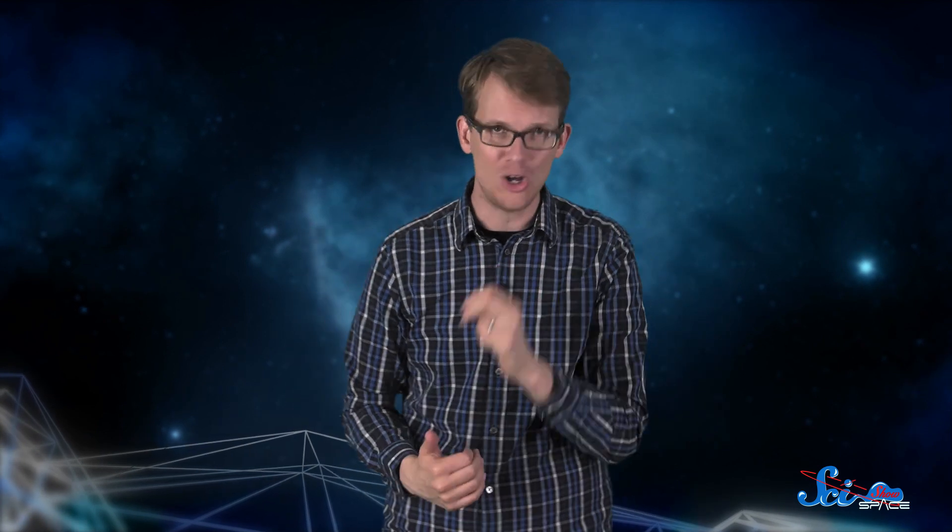The team announced the Pioneer anomaly to the public in a paper published in 1998. In response, theorists published hundreds of papers about what could be causing it. They thought it might have come from things like an undiscovered planet, dark matter, or even the expansion of space-time itself. If some of the papers turned out to be correct, they'd prove that a lot of what we knew about the universe was just plain wrong.